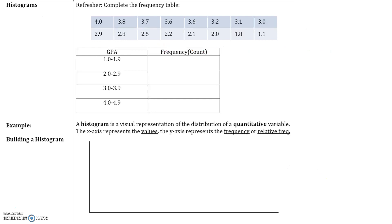Let's have a quick refresher and complete the following frequency table. If we look at the first class, we have GPAs between 1.0 and 1.9, including 1.0 and including 1.9. We have two GPAs, so the frequency is 2. Two students have a GPA between 1.0 and 1.9, including both 1.0 and 1.9.